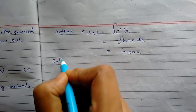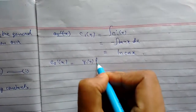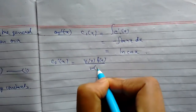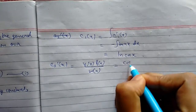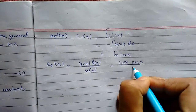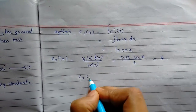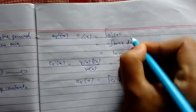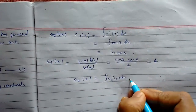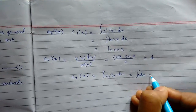Similarly, C2'(x) = Y1(x)·F(x) / W(x) = cos(x)·sec(x) / 1 = 1. Therefore C2(x) = ∫1 dx = x.